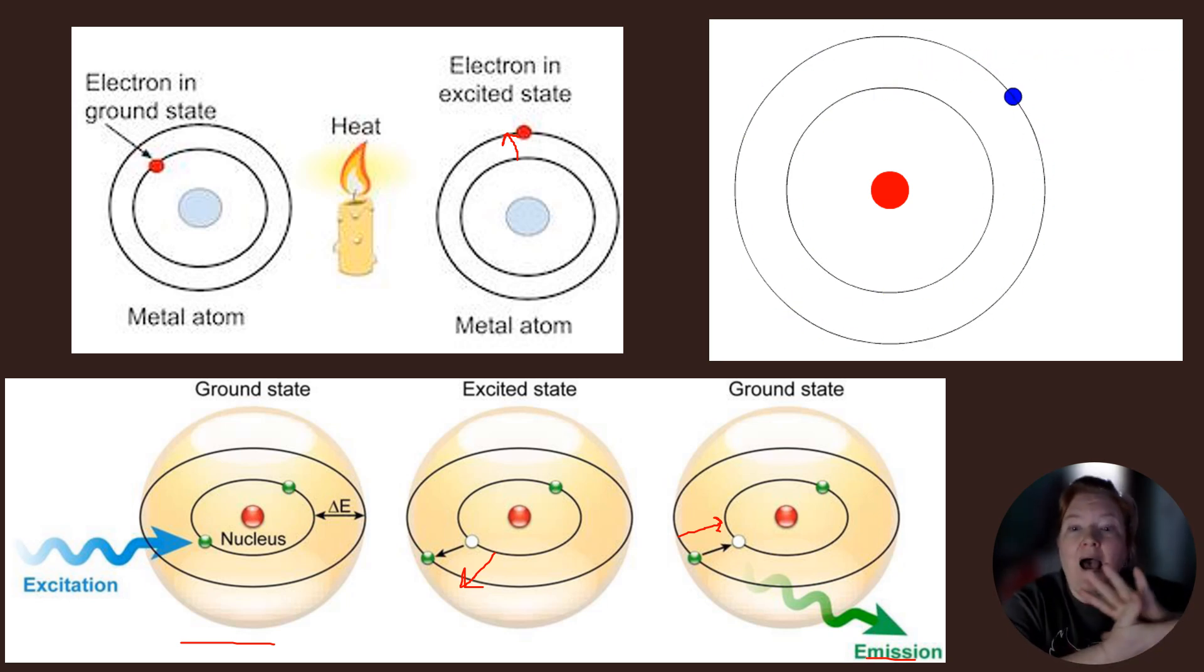So they will fall back down to ground state and in the process emit energy, and that energy we see as light. How many energy levels the electron falls and from which energy level it falls determines the color that we see. If it has a lot of energy, it's going to tend toward the violet end of the spectrum. Less energy is going to tend toward the red end of the spectrum.